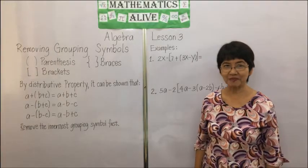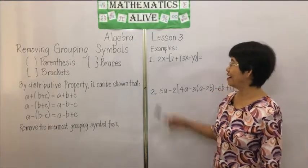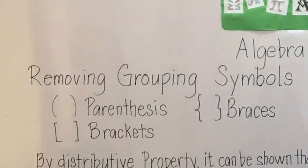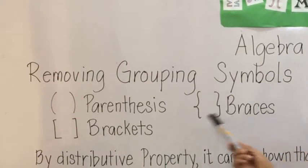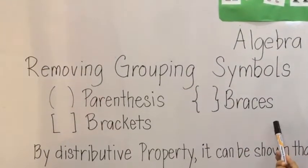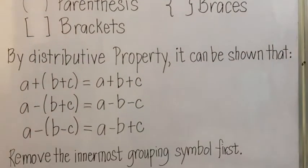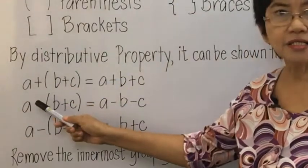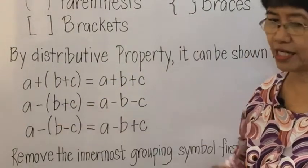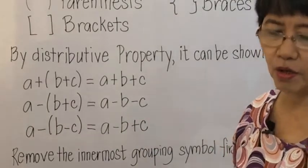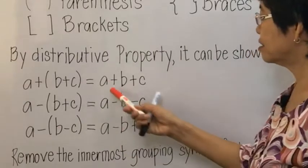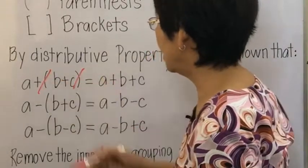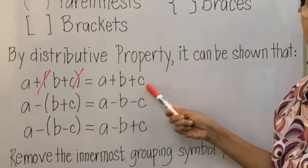Welcome to Mathematics Alive, Algebra Lesson 3: Removing Grouping Symbols. The grouping symbols used in mathematics are parentheses, brackets, and braces. By the distributive property, if a grouping symbol is preceded by a positive sign, you simply remove the grouping symbol with no change in signs, giving you A plus B plus C.